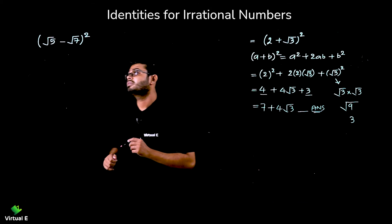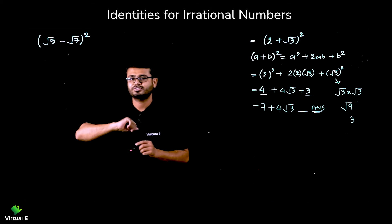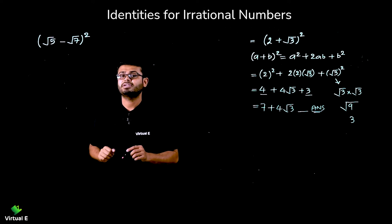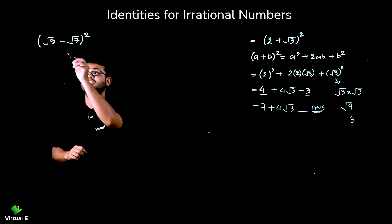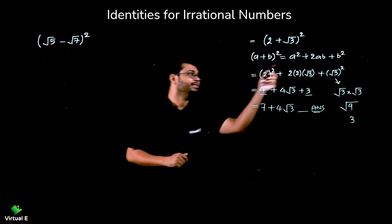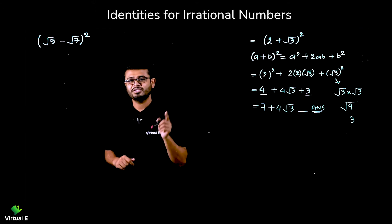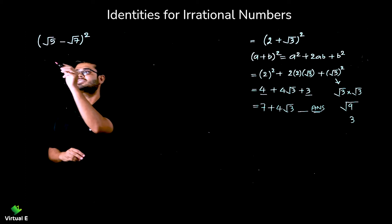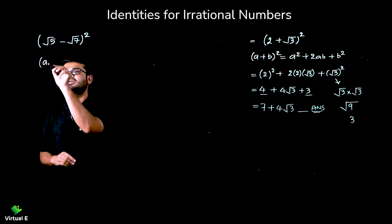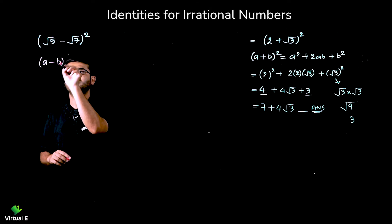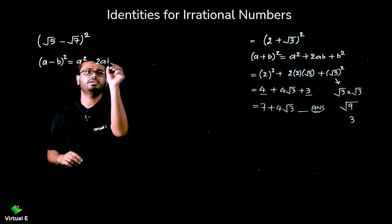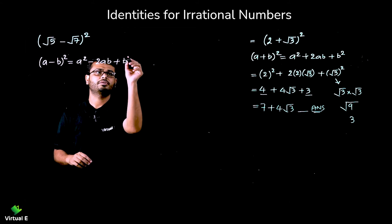Let's discuss one more question. Here we have both irrational numbers: (√5 - √7) whole square. This is for subtraction and the previous one was for addition — only the sign changes, the method remains the same. So first let's write the identity.